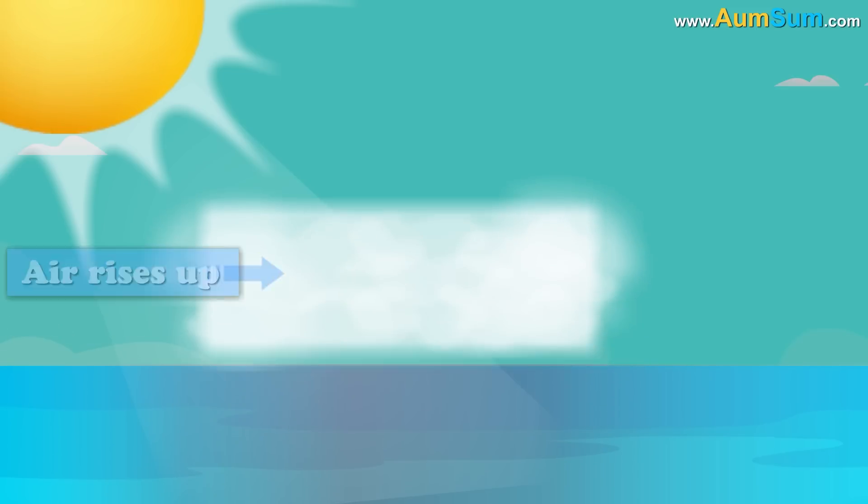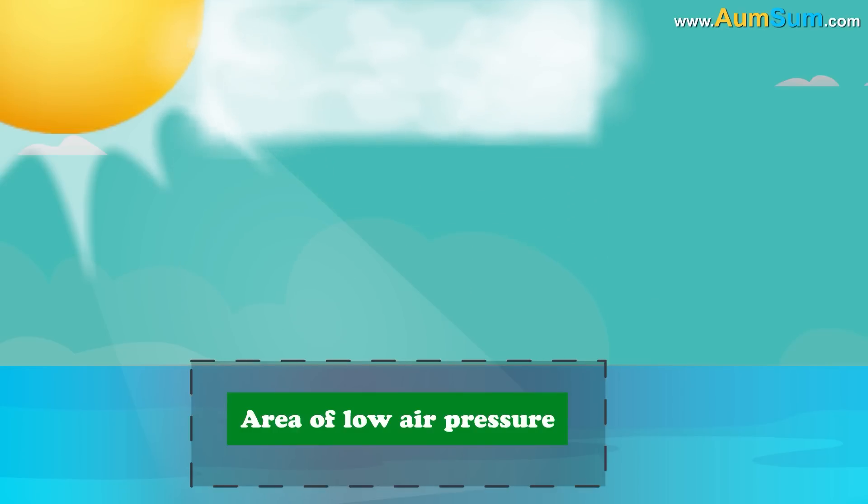This air rises up, creating an area of low air pressure below. Air from surrounding areas pushes into this low pressure area. This air also becomes warm and moist and rises. This cycle keeps on continuing.